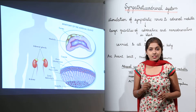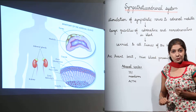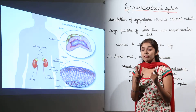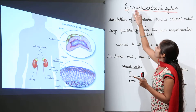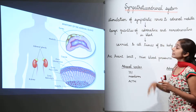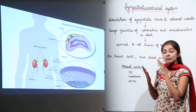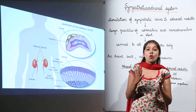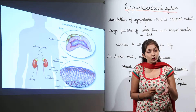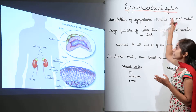Let's discuss what is the sympathicoadrenal system. From the word itself, 'sympathico' refers to the sympathetic nervous system and 'adrenal' refers to the adrenal gland. So we are talking about the integration of the sympathetic nervous system and the adrenal medulla, which together form the sympathicoadrenal system.